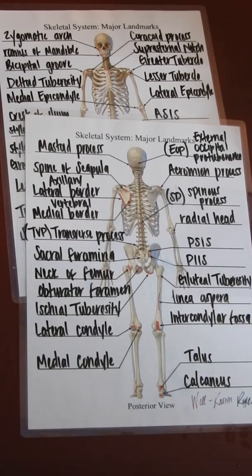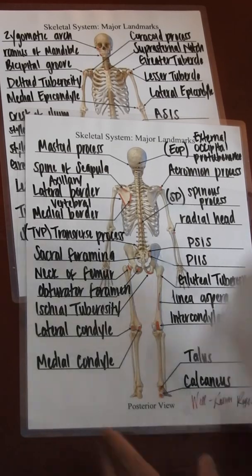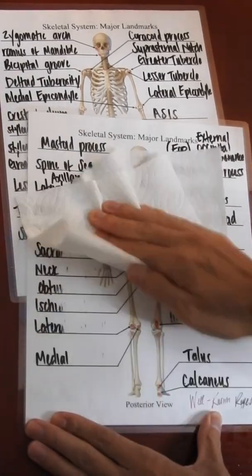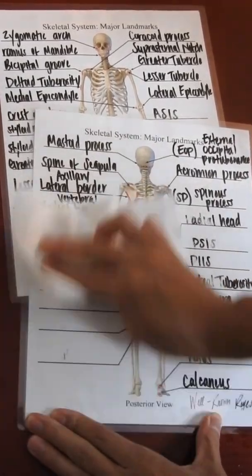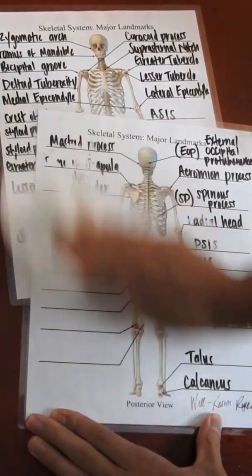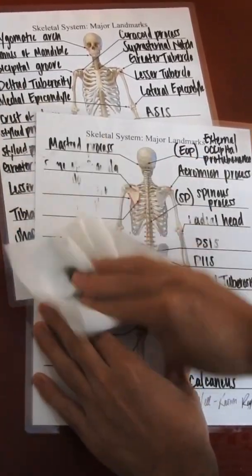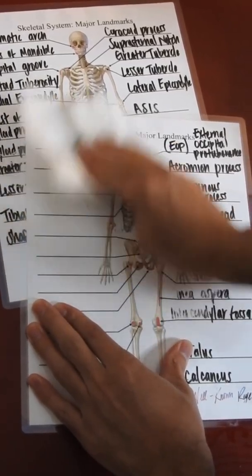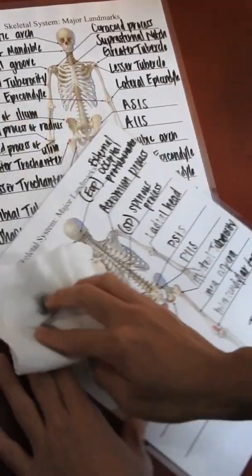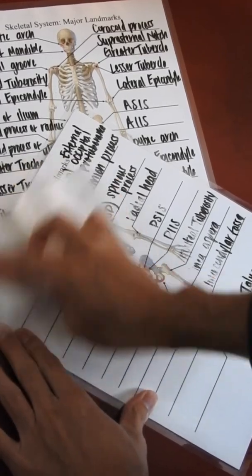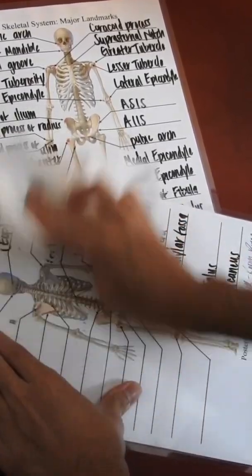So if you would like a hard copy of this, if you check the description down below, you'll find a link where you can go and purchase this custom made by me. Also, if you would like to check out the link below that one, it is going to be where you can access a digital copy of this, where you can print it out yourself and work on it and study the major bony landmarks of the skeletal system.